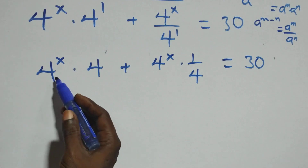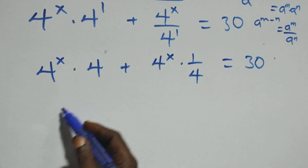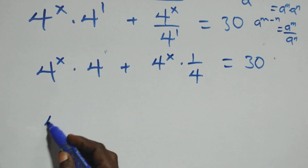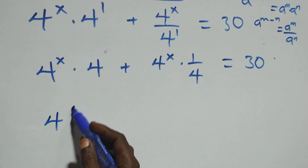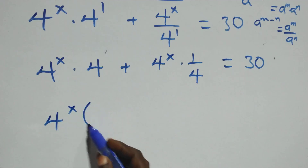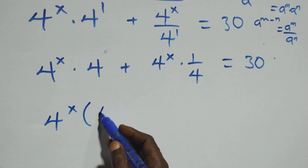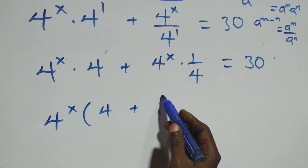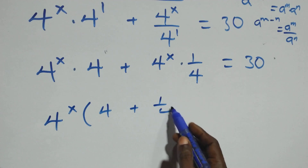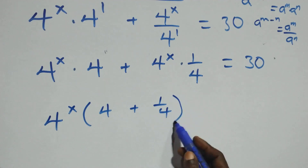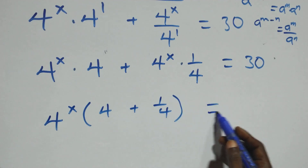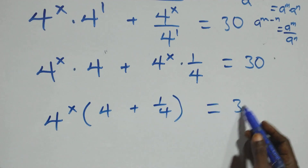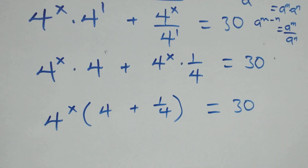Here we have 4^x as a common factor. When we factor it out, we get 4^x into brackets: 4 plus 1 over 4, close bracket, equals 30 on this side.